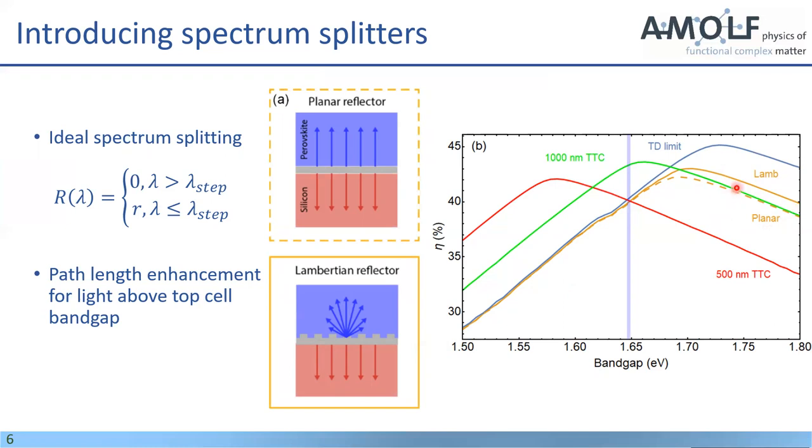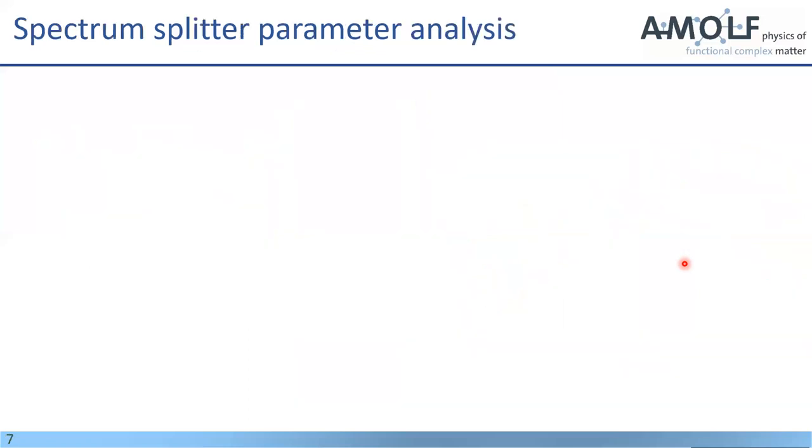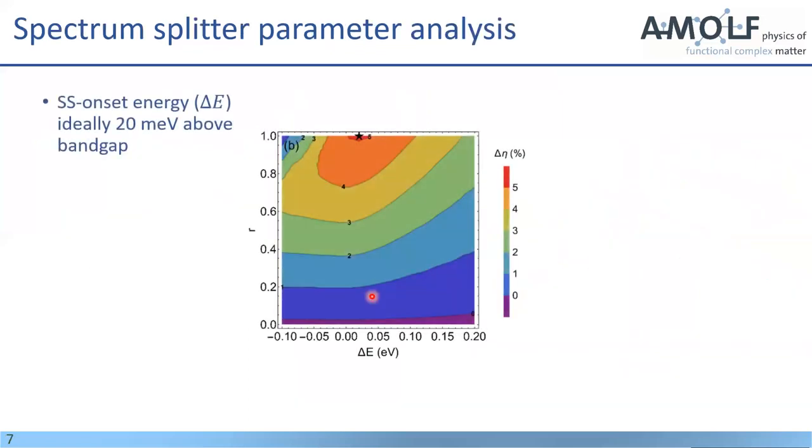And there's more parameters to look at when we consider this, because you don't necessarily have to have the onset of your reflection right at the band gap, and you don't necessarily have to have unity reflection. Now to begin with, we can analyze here the onset of your reflection, and zero would be basically at the band gap, and then all the other values is slightly above or slightly below the band gap. And here you have the reflection value that you need. And what you can see here is that basically, for a band gap, this all is for a band gap of 1.7 electron volts for the top cell, then really, you achieve the highest increase in efficiency by basically having unity reflection, but perfectly reflecting above the band gap or above this threshold. And the threshold is actually 20 millielectron volts above the perovskite band gap. So it's slightly shifted.